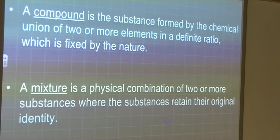A compound is then a substance formed by the chemical union of two or more elements in a definite ratio. So when we talk about that definite ratio, like water is H2O, right? So there's always two parts hydrogen and one part oxygen. And that ratio is fixed by nature. So that's not something that we change or that we made happen. It's just what happens in nature.